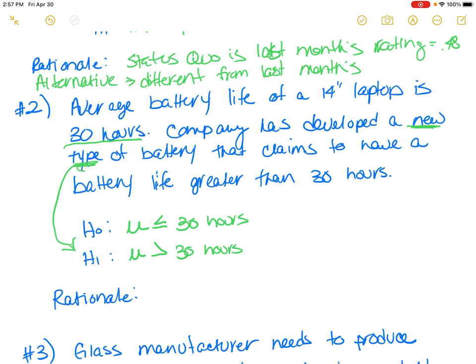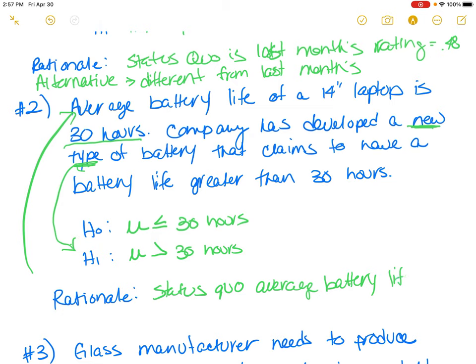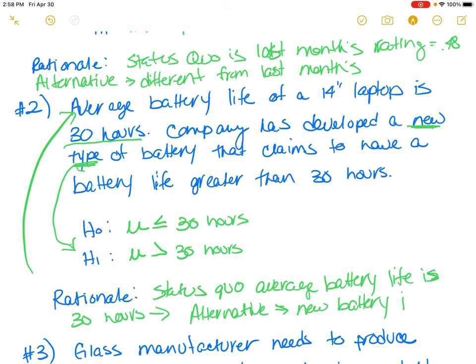The rationale here goes back to the status quo. The status quo was given to us: the average battery life is 30 hours. That's what we know to be true. The alternative is that the new battery life is greater than 30 hours.